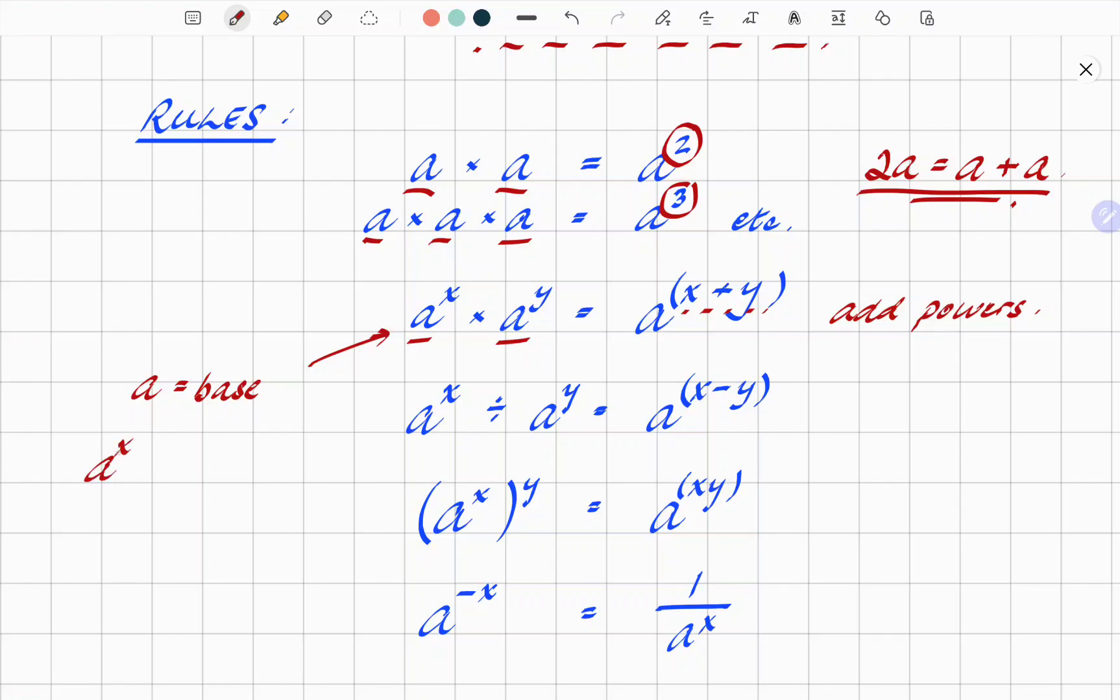Now, the very important thing here to note is the bases, i.e. A equals the base. They've got to be the same. If you have A to the X times B to the Y, it doesn't do anything. You can't combine. Can't combine these because the bases A and B are different.